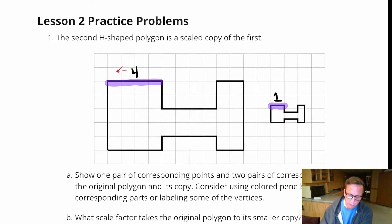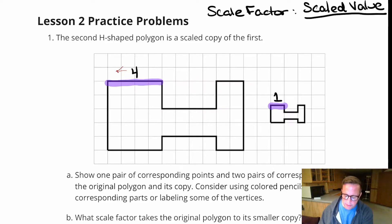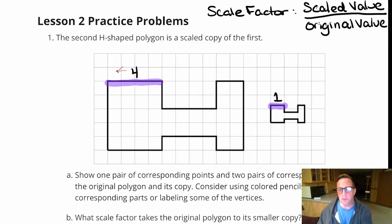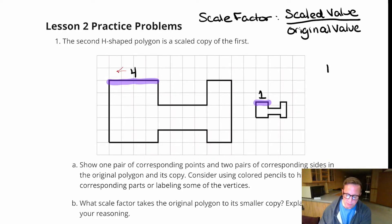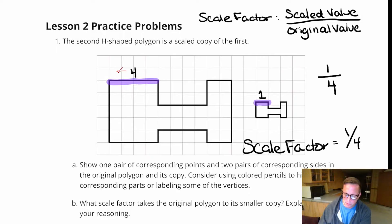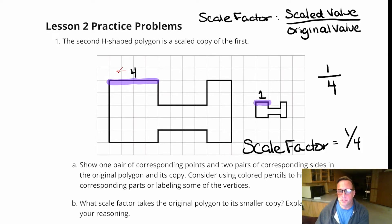When you do scale factor, you take the scaled value and divide it by the original value. A lot of times those numbers don't divide evenly, so you end up with a fraction. For this one, the scaled number was one and the original was four, so the scale factor is one fourth. That makes sense because it's smaller — if a scale factor is less than one, it's a reduction. If it's greater than one, it's an enlargement.